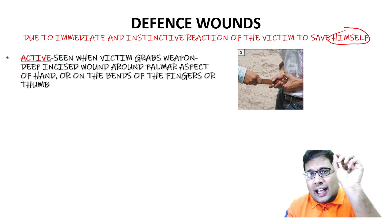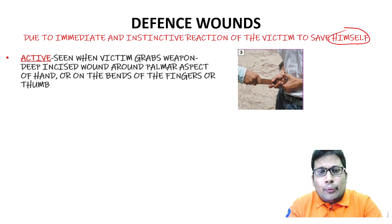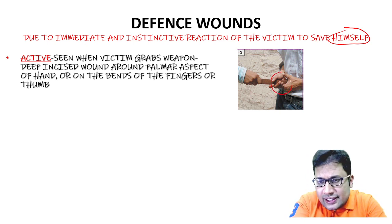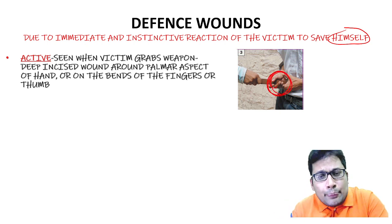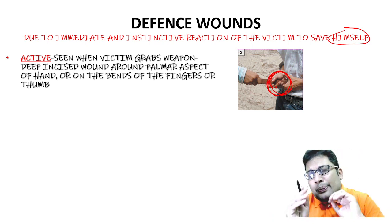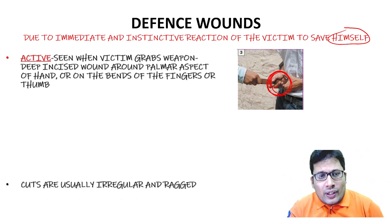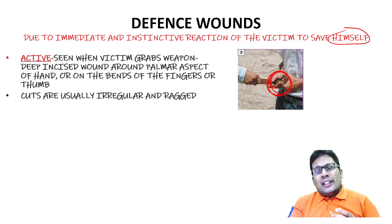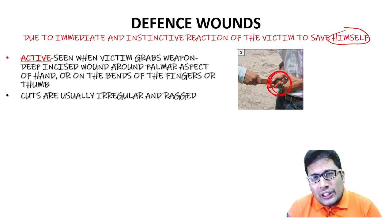Active defense injury is seen when the victim grabs the weapon. The common sites are the palmar aspect of the hand, the fingers, and the bends of the fingers and the thumb. Active defense injuries are usually irregular and ragged according to KSN Reddy. Passive defense injury occurs when a person tries to defend by raising the hand, arm, or leg.